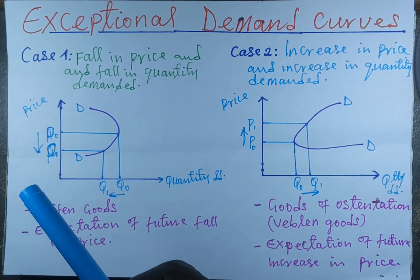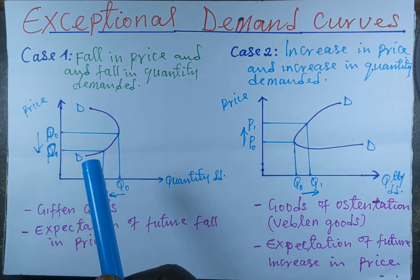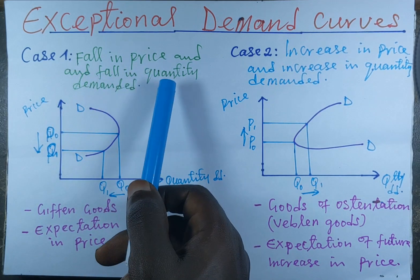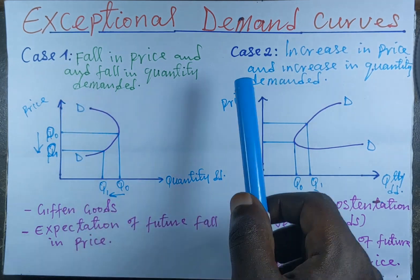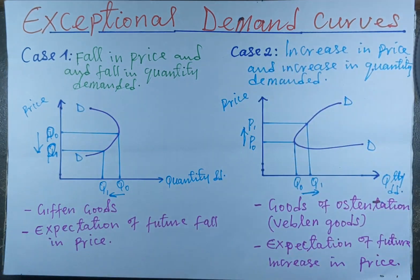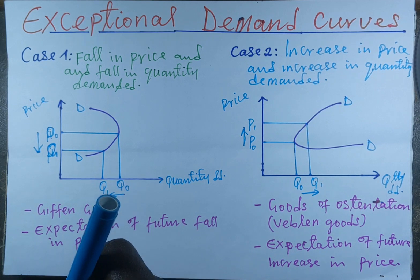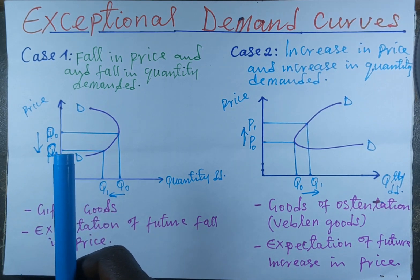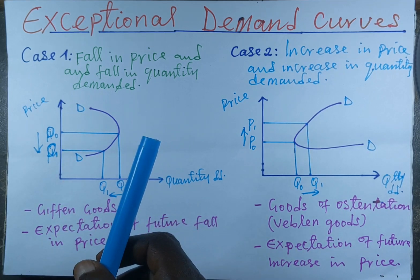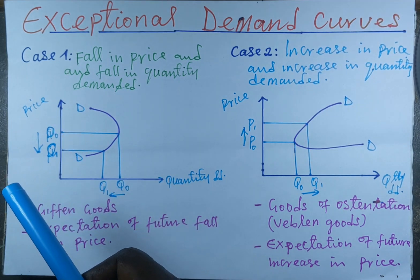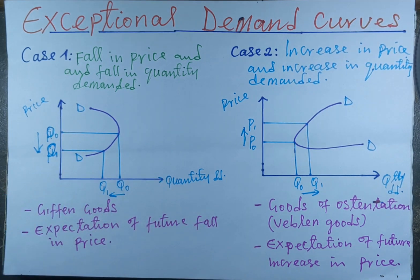We are going to look at this in two aspects: the first case where quantity demanded falls as price falls, and the second case where quantity demanded increases as price increases. This is a contradiction to the law of demand, which states that quantity demanded increases as price falls and falls as price increases.